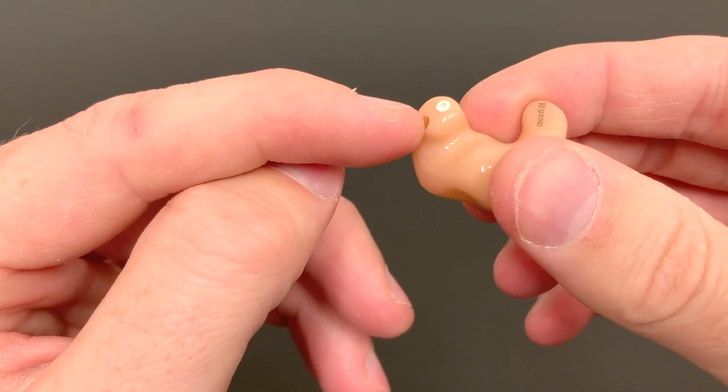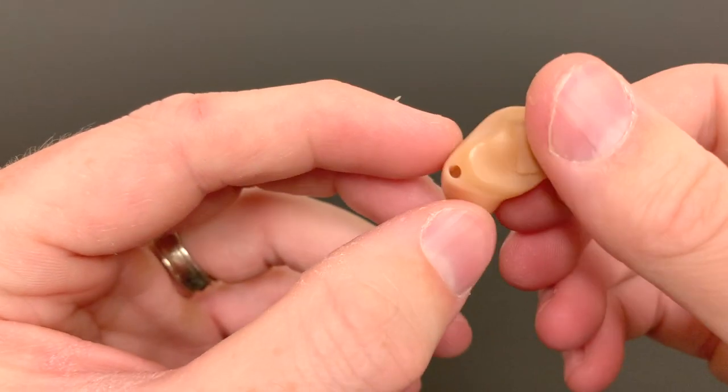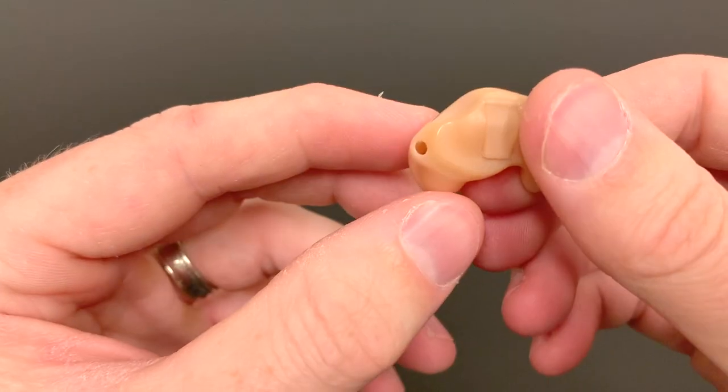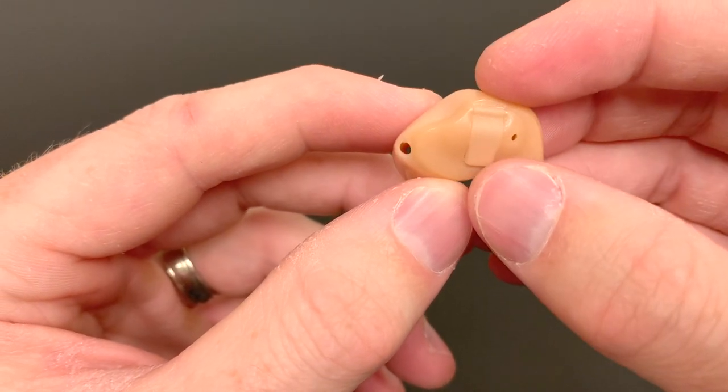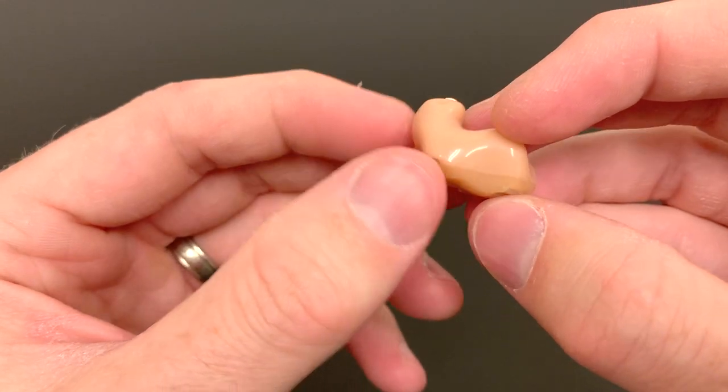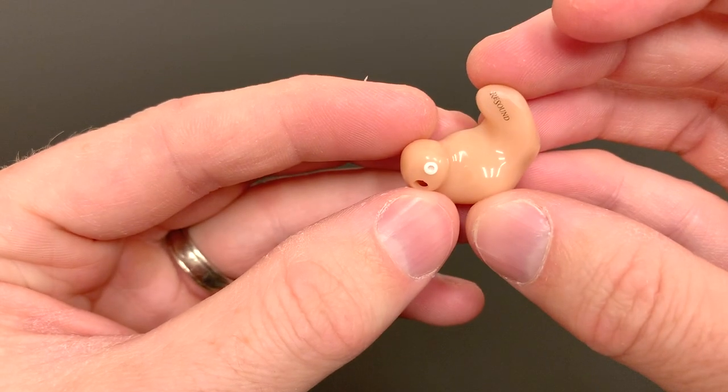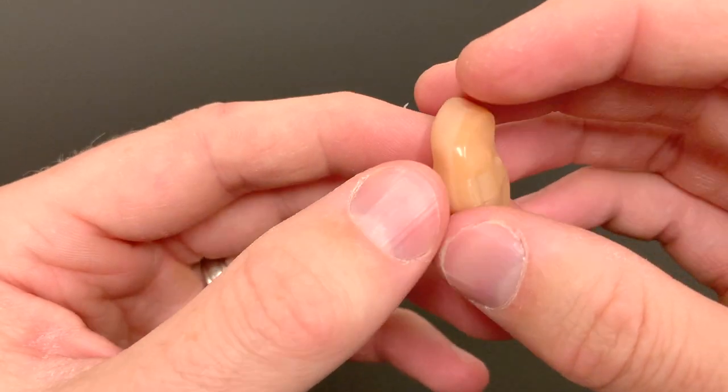Some of these styles of hearing aids have an additional hole here, and what that is called is a vent. We use that vent to help with comfort with the hearing aid, but also to change the acoustic or sound response of the hearing aid.